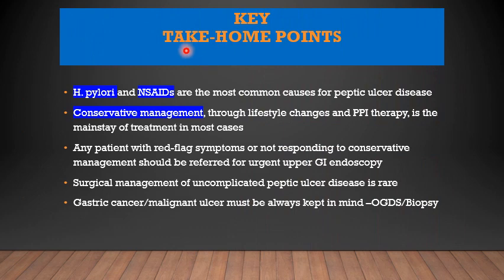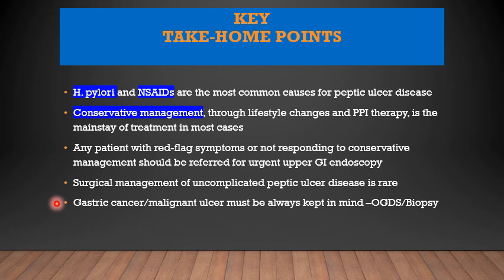Key points to take home from this lecture: First, H. pylori and NSAIDs are the most common causes of peptic ulcer disease. Second, conservative management through lifestyle changes and PPI therapy is the mainstay of treatment in most cases. Third, any patient with red flag symptoms or not responding to conservative management should be referred for urgent upper GI endoscopy. Fourth, surgical management of uncomplicated peptic ulcer is rare today — most surgical treatment is only carried out for complications of peptic ulcer.